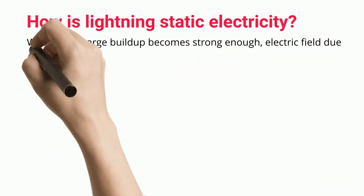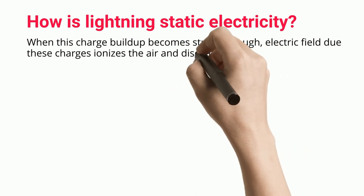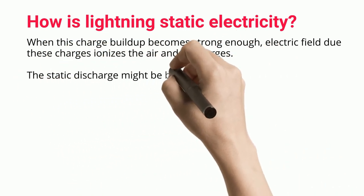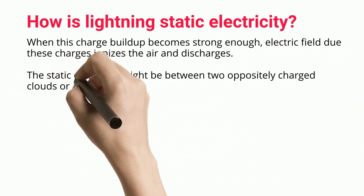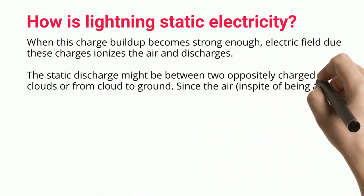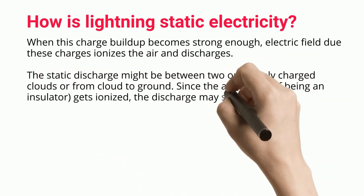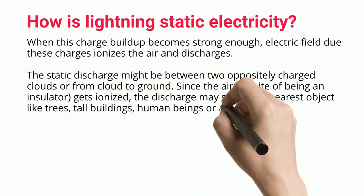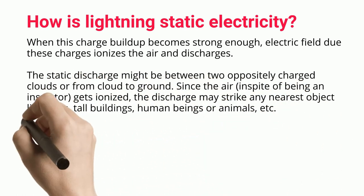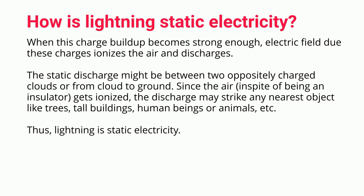When this charge buildup becomes strong enough, the electric field due to these charges ionizes the air and discharges. The static discharge might be between two oppositely charged clouds or from cloud to ground. Since the air, in spite of being an insulator, gets ionized, the discharge may strike any nearest object like trees, tall buildings, human beings, or animals.